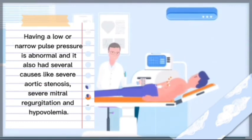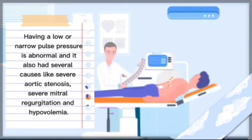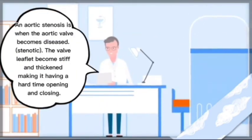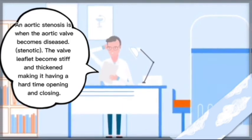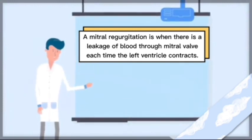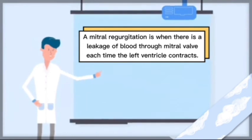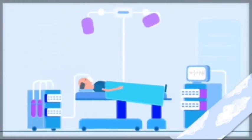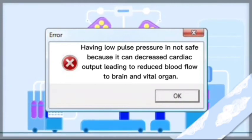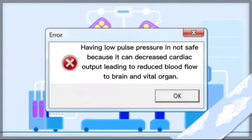Having a low or narrow pulse pressure is also abnormal, with several causes including severe aortic stenosis, severe mitral regurgitation, and hypovolemia. Aortic stenosis is when the aortic valve becomes diseased — the valve leaflets become stiff and thickened, making it difficult to open and close, so the heart must work harder to pump blood. Mitral regurgitation is when there is a leakage of blood through the mitral valve each time the left ventricle contracts, allowing blood to flow in two directions. Low pulse pressure can decrease cardiac output, reducing blood flow to the brain and vital organs, and if cardiac output is very low, it can damage organs, especially the kidneys.